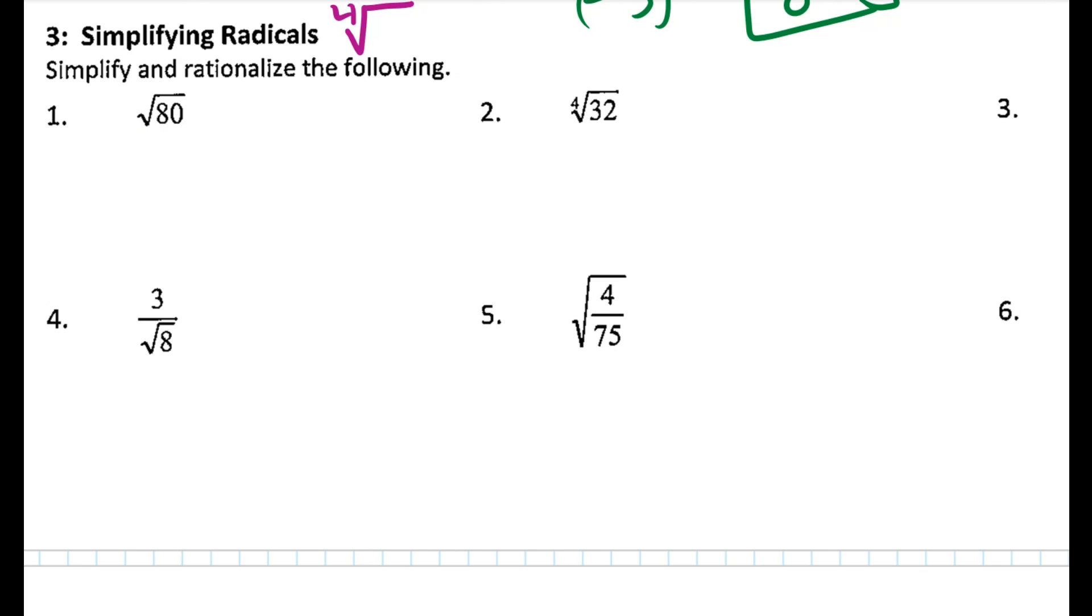So 80 is kind of like writing 16 and 5. 80 is the same as 16 times 5. So the square root of 80 is the same as the square root of 16 times 5. The square root of 16 times 5 is the same as the square root of 16 times the square root of 5. The square root of 16 is just 4. What's the square root of 5? Well, it's just square root of 5, and we're done.